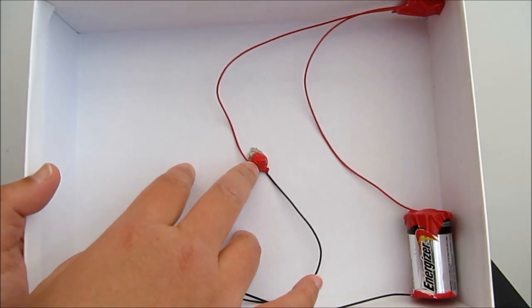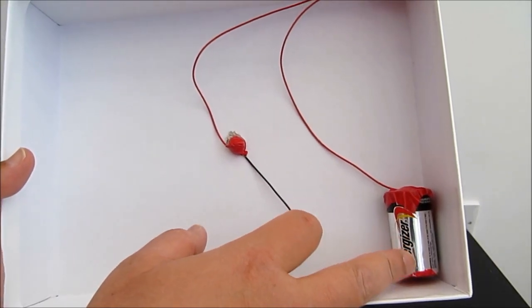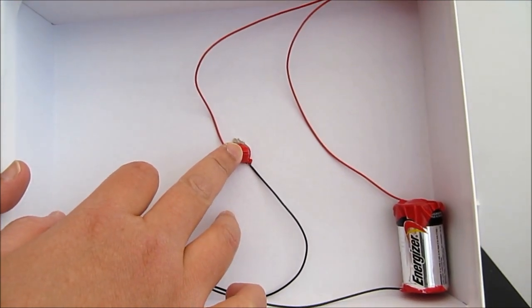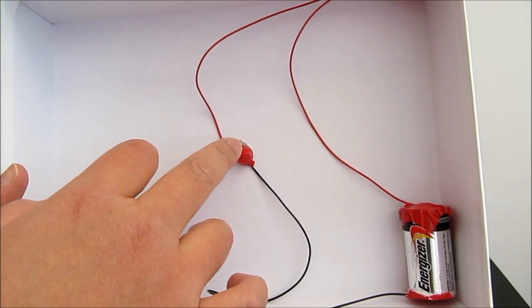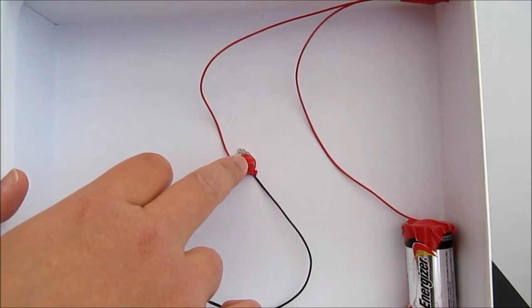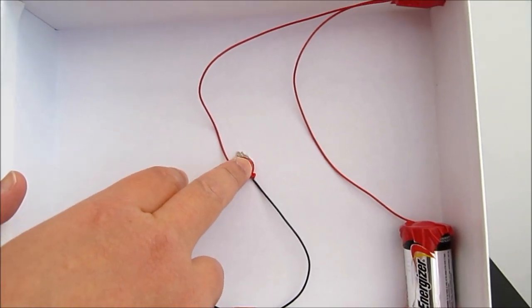So basically we have connected from here which is the battery, which is the negative point. So we just connect the wires onto the back of the light bulb and we're gonna do a circuit and also some wires in here. Just tape it down.